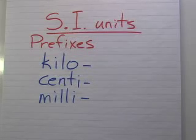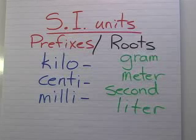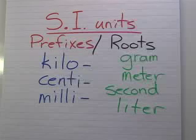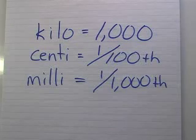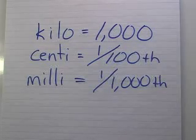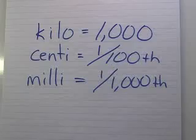The common root words that you might use with these would be gram for mass, meter for length, second for time, and liter for volume. And these can be used interchangeably. Millimeter, milliliter, milligram, they all work. Kilo means one thousand, centi, one hundredth, milli, one thousandth. Certainly there are other prefixes that are used in the SI system, but kilo, centi, and milli are what you're going to run into 90% of the time. So if you can have those down cold, you'll be good to go.